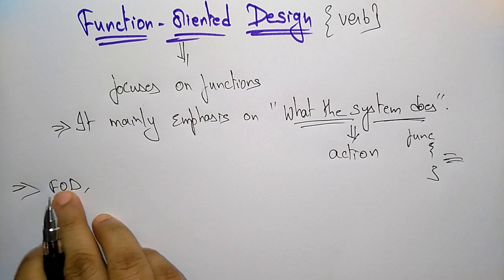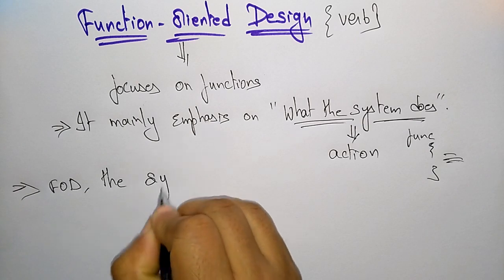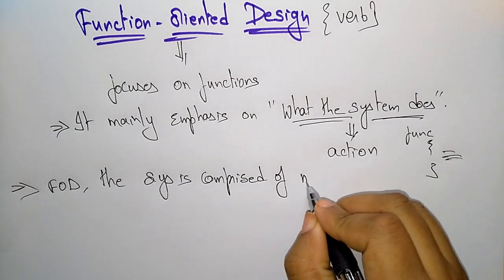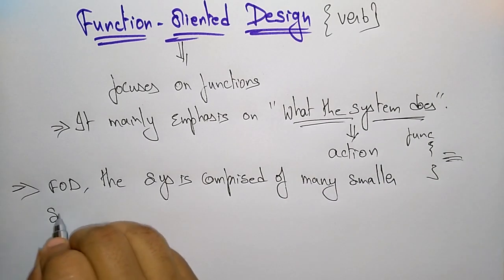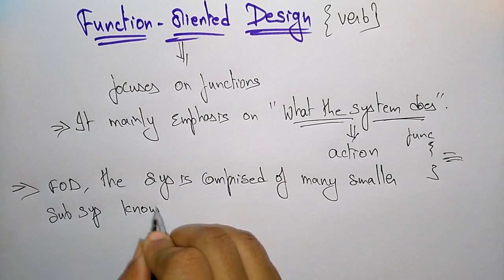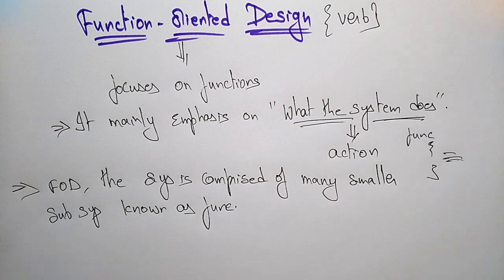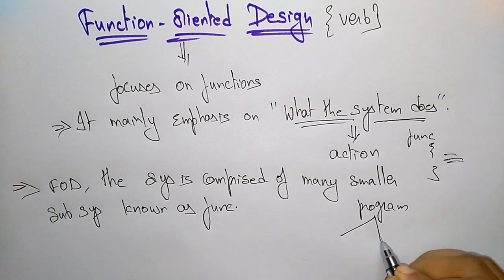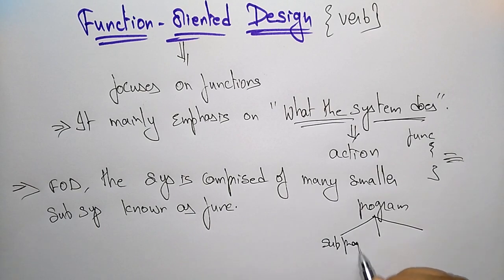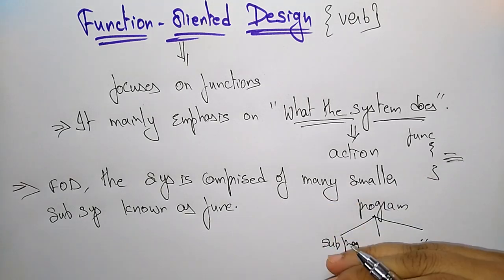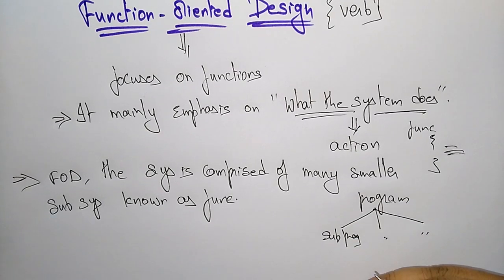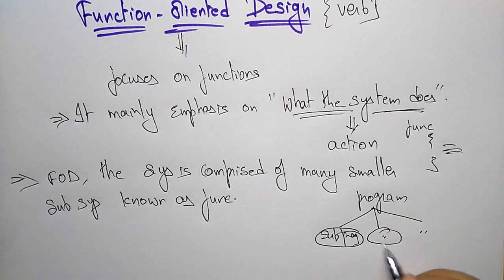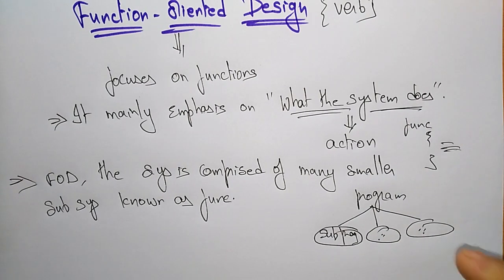Now let me explain function oriented design — FOD. The system is comprised of many smaller sub-functions, known as functions. The whole system is divided into smaller functions. Suppose a program is there — that program is divided into sub programs, meaning sub functions. One function is again divided into sub functions, and those are further divided. These functions are capable of performing significant tasks in the system.